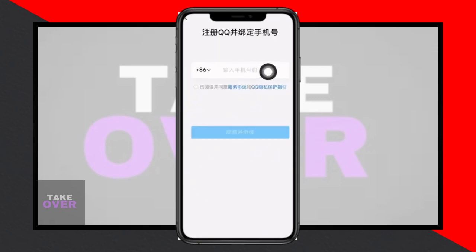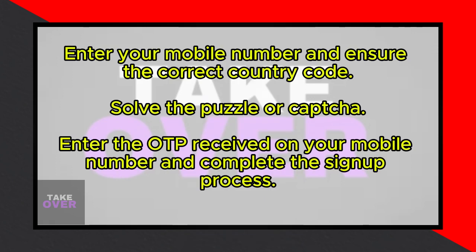After entering your mobile number, tap on the radio button and then the blue button. Next you'll encounter a puzzle or CAPTCHA, which you'll need to solve. Once you've completed that, you'll receive a verification code or OTP on the mobile number you provided earlier. Enter the OTP and proceed to fill in your details including your desired ID and password.